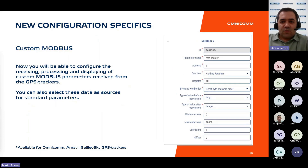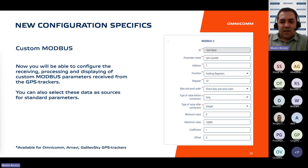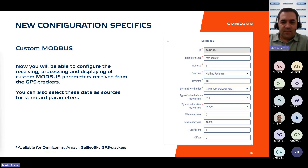The final category of custom parameters involves data acquisition via Modbus protocol. Some GPS trackers possess dedicated protocol fields responsible for Modbus data transmission. This functionality is available for Omnicom, Arnavi, and Galileo Sky GPS trackers. Similar to CAN and custom parameters, users can configure input data settings and specify conversion values for Modbus parameters. Furthermore, these values extend beyond regular visualization — they can also serve as primary sources for main parameters such as fuel level, RPM, and ignition status, enhancing their utility within the platform.